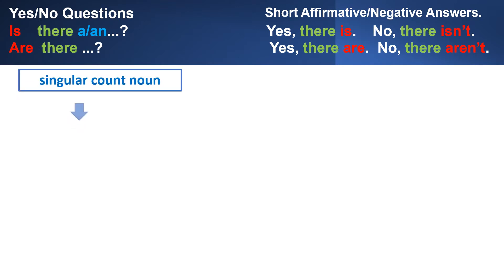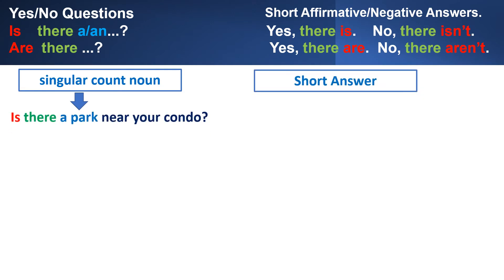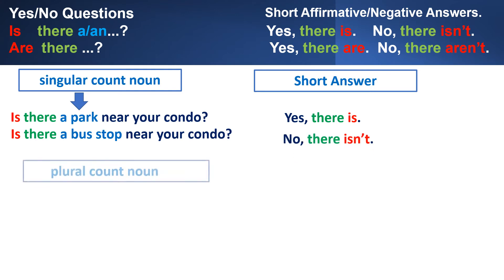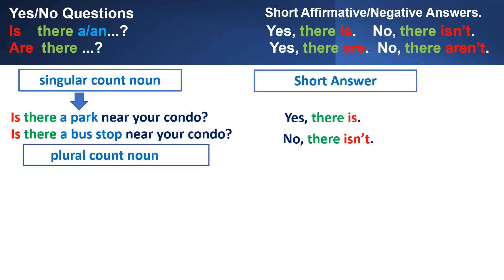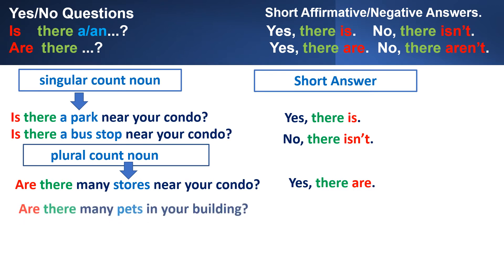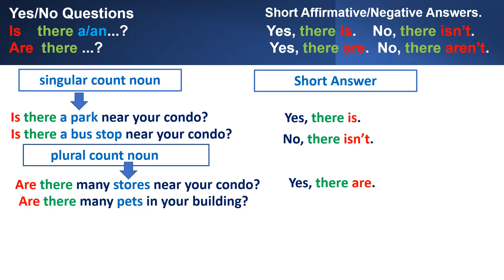With a singular count noun we say: Is there a park near your condo? The short affirmative answer is yes, there is. Remember, in affirmative short answers there are no contractions. Is there a bus stop near your condo? No, there isn't. With a plural count noun we say: Are there many stores near your condo? No, there aren't.